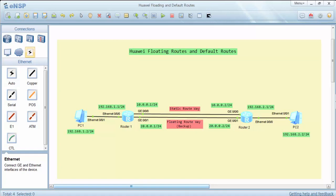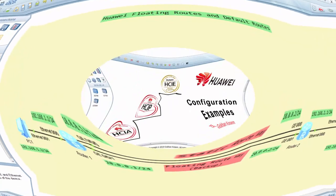In this configuration example, we will configure floating routes and default routes on Huawei routers. Floating routes are backup routes for static routing. If a static route fails, then the floating route is used.